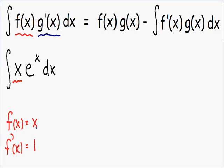So now let's label our g prime of x. If we go back to our example the only thing we have left is e to the x. So the e to the x has to be our g prime of x. So g prime of x is equal to e to the x.